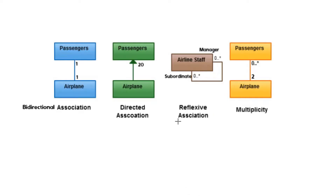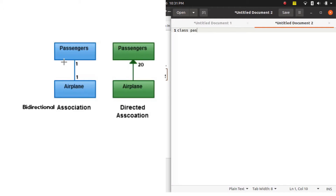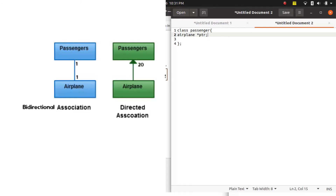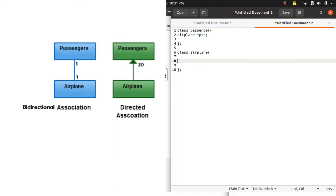Here we have different kinds of association. The first one is bidirectional association. A bidirectional association means that both of the classes involved in the association each have an object or pointer of the other class. So its implementation would go something like this: class Passenger would have a pointer to the Airplane class — something like airplane_ptr. Meanwhile, the Airplane class would also have a pointer pointing towards the Passenger class — something like passenger_ptr. This is how bidirectional association is implemented.